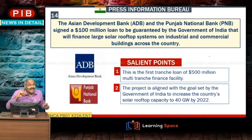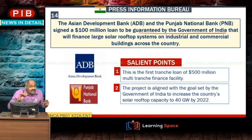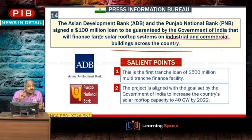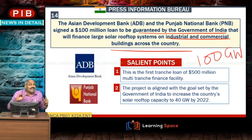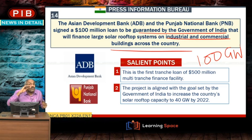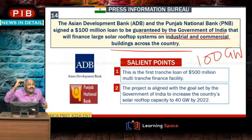The Asian Development Bank and Punjab National Bank signed a $100 million loan guaranteed by the Government of India for solar rooftop systems on industrial and commercial buildings. India's total solar generation capacity target by 2022 is 100 GW (1 lakh megawatt), of which 40% — i.e., 40 GW or 40,000 MW — is to be created through rooftop systems on commercial and industrial buildings.